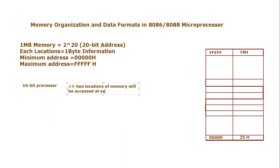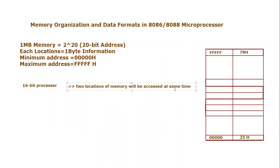Two locations will be accessed simultaneously — at the same time — because the processors are 16-bit and every location holds one byte. So 16 bits can come only from two locations. That is how this memory is attached with the 8086 or 8088 microprocessor. Now we need to know one thing more: there are three types of data formats — byte, word, and double word.